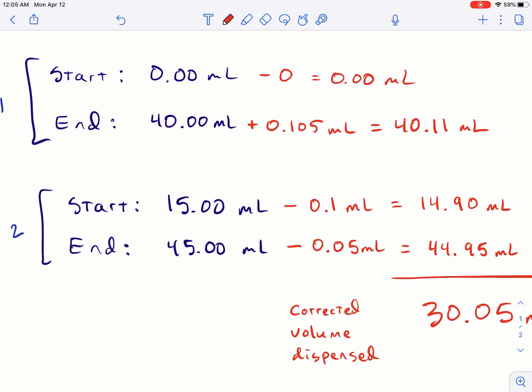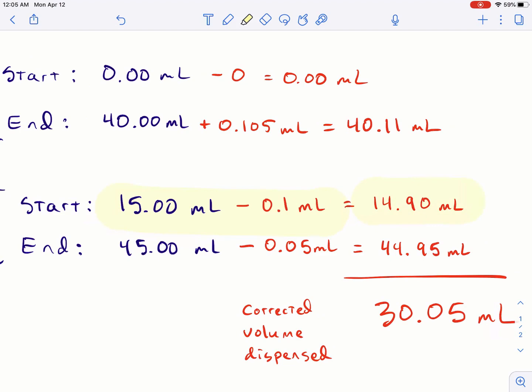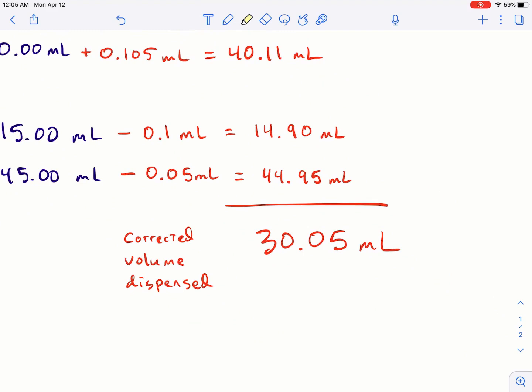So you would adjust your first number, your starting volume with that correction factor, and then have your new starting volume. Then you have your end and your new ending volume. And then for this titration, ultimately you care about the amount that's dispensed. So you just subtract these two numbers here and you get your corrected volume dispensed. And this is the number that you're going to use in your titration experiment to then actually do whatever math you have with that.